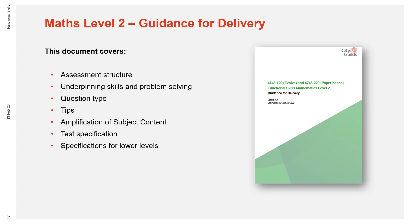Looking at the level two guidance for delivery document, the layout is very similar to level one. It contains an outline of the structure of assessment, providing information regarding the two parts of the exam. The non-calculator section provides 10 single-mark context-free questions and 2–5 problem-solving questions worth a total of 5 marks. For the calculator permitted section, there are 5 single-mark context-free questions, one single-mark question for a sense-check of results, and a further 9 problem-solving questions with practical contexts worth 2–6 marks each. There's a reminder that underpinning skills comprises 25% of the paper and problem-solving covers the remaining 75%.